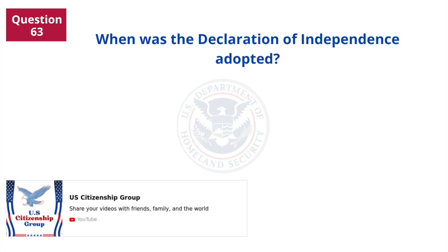When was the Declaration of Independence adopted? July 4, 1776.